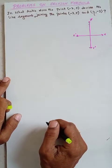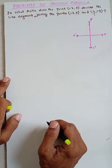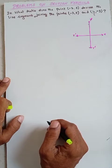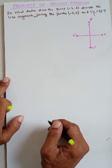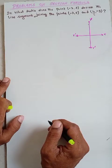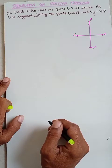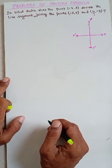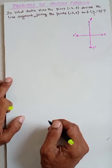Hello students, let us go for one more problem based on the section formula. The problem is: in what ratio does the point (−2, 3) divide the line segment joining the points (−3, 5) and (4, −9)?